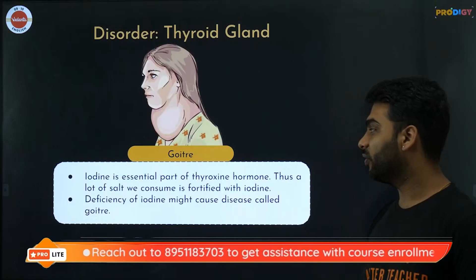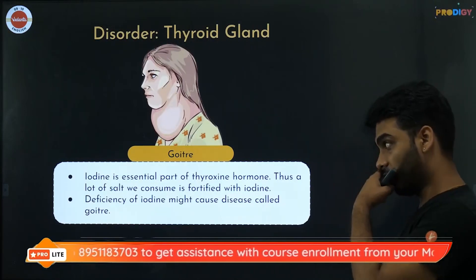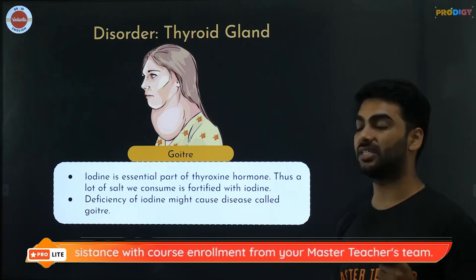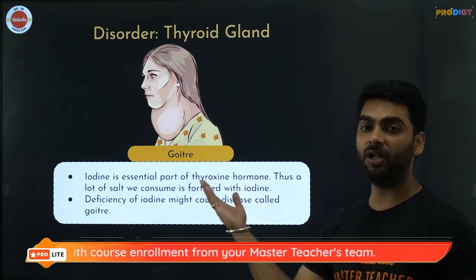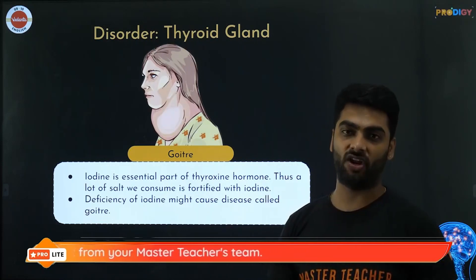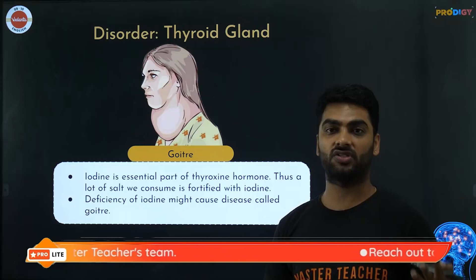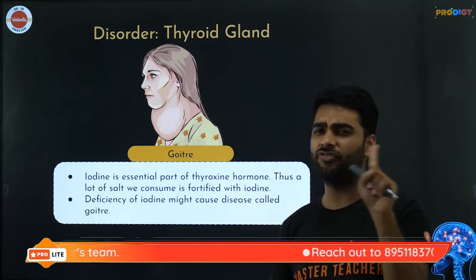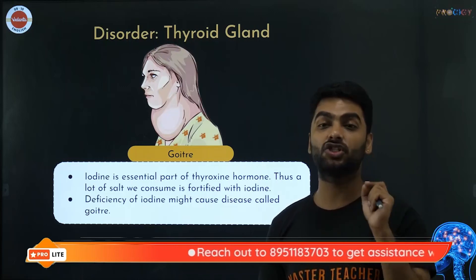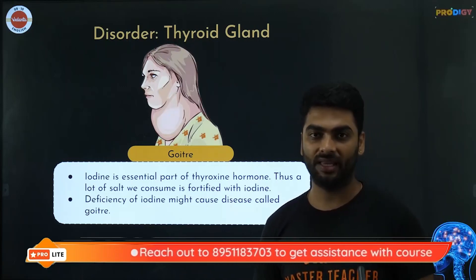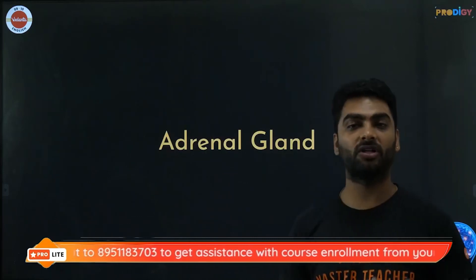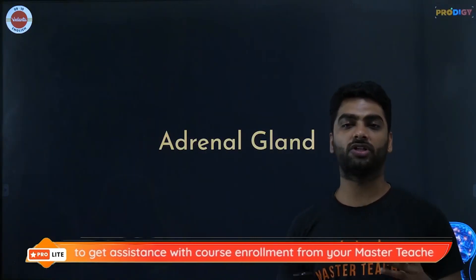Iodine is an essential part of the thyroxine hormone, so much of the salt we consume is fortified with iodine. Deficiency of iodine can cause goiter. Simple goiter is swelling of the neck due to hyposecretion of thyroxine. Hypersecretion of thyroxine causes bulging eyes, weak body, and a lean and thin person — this is called exophthalmic goiter.